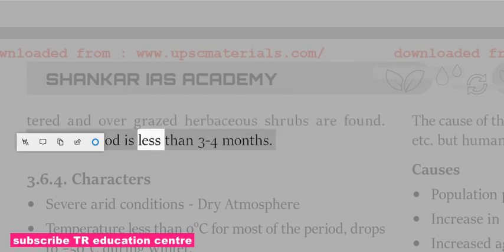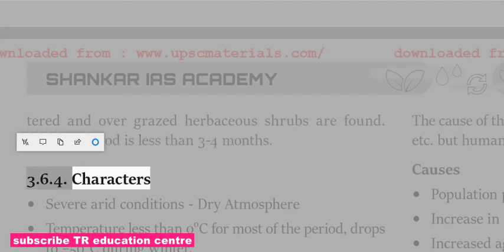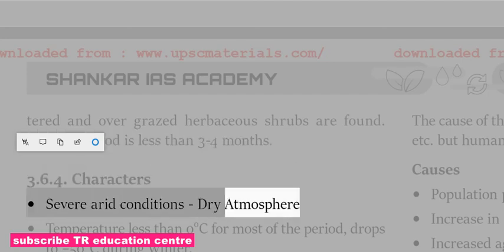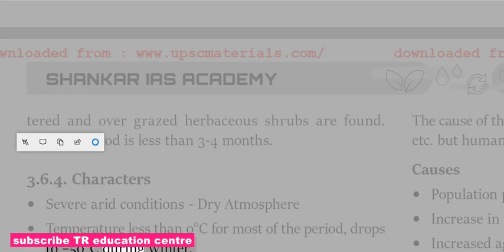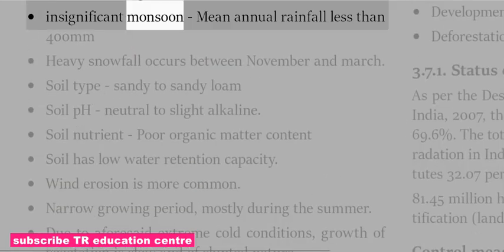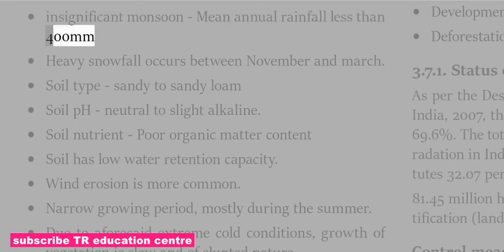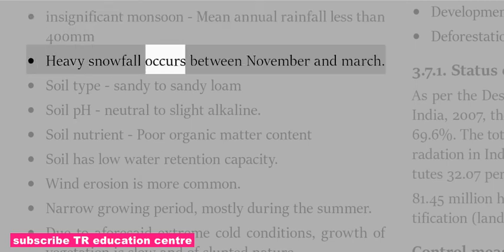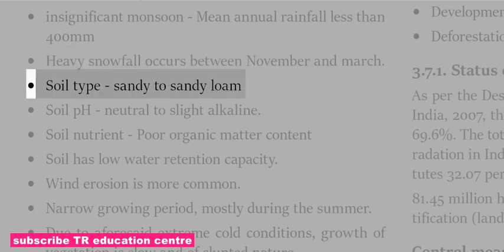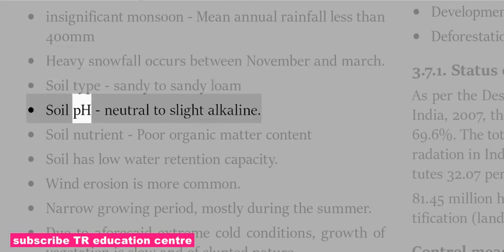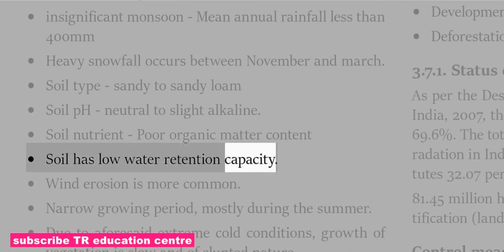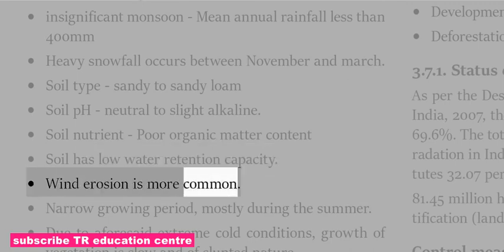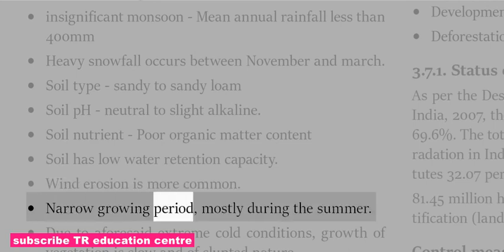Characteristics of the Cold Desert include severe arid conditions, dry atmosphere, temperature less than 0°C for most of the period dropping to minus 50°C during winter, insignificant monsoon, mean annual rainfall less than 400 mm, and heavy snowfall between November and March. Soil type is sandy to sandy loam with neutral to slightly alkaline pH, poor organic matter content and low water retention capacity. Wind erosion is more common. The narrow growing period is mostly during summer, and due to extreme cold conditions, growth of vegetation is slow and stunted.